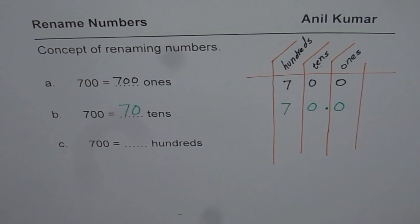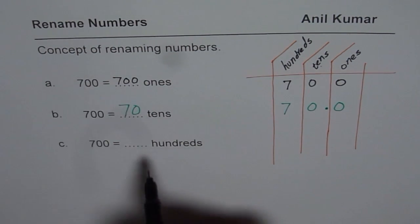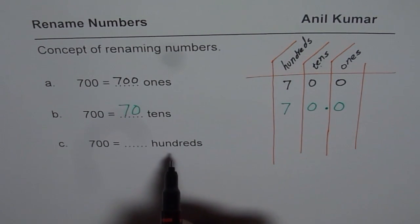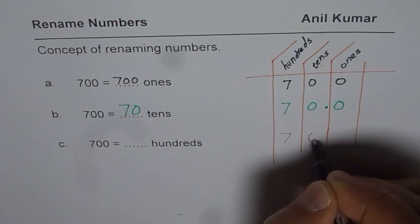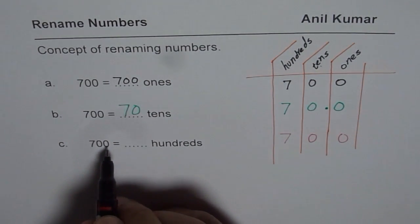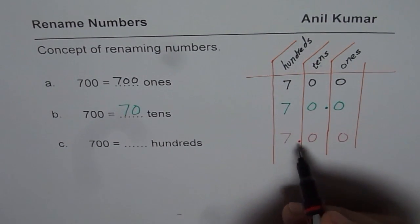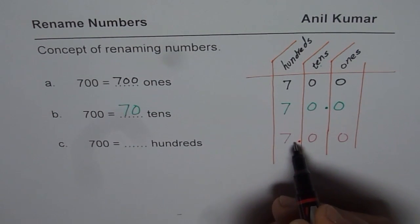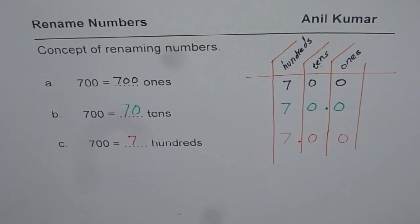Now let's look at renaming 700 as hundreds. We write the same number 700, and since we want to know how much 700 is as hundreds, we put a decimal at the hundreds column. Everything to the left side counts, which is 7. So 700 is 7 hundreds. That is how you can rename 700 as hundreds.